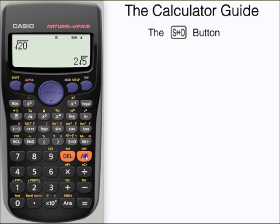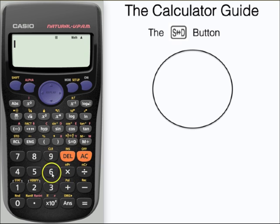We can also use the S⇔D button to help us answer a question such as this. What is the circumference of this circle with diameter of 6 cm?